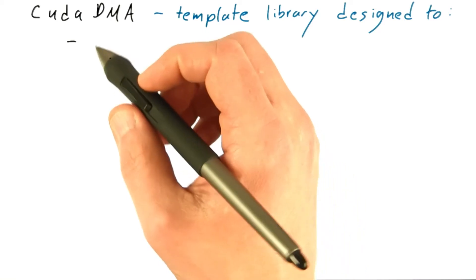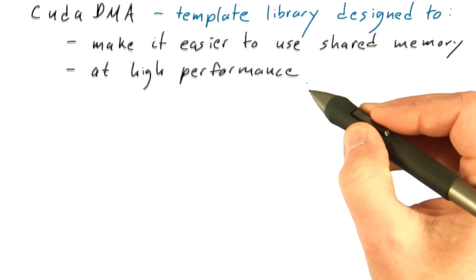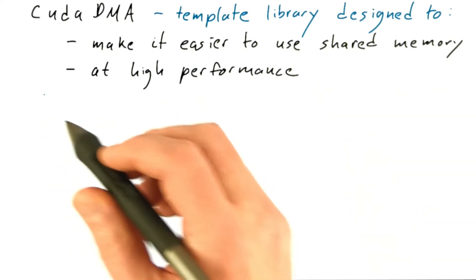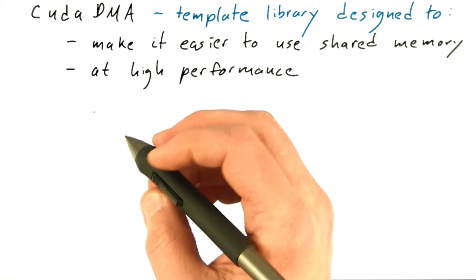CudaDMA is a template library designed to make it easier to use shared memory while achieving high performance. To use CudaDMA, programmers declare CudaDMA objects for each shared memory buffer that needs to be loaded or stored.